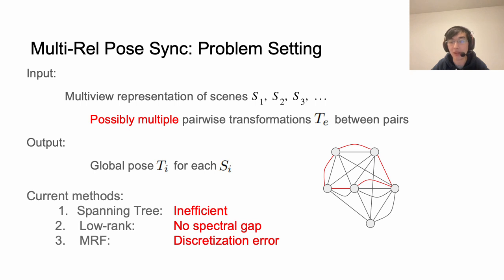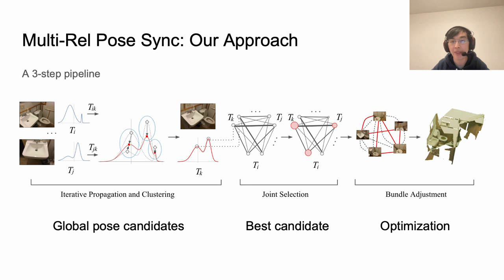Previous works for solving this problem can be classified into three categories. The first are spanning tree based methods which propagate global pose estimation along a spanning tree of the graph. The main drawback of such methods are the inefficiency due to the large number of paths and the choice of spanning trees. The second type formulates synchronization as a low rank recovery problem of a matrix encoding, which fails when there is no spectral gap due to the high noise for multiple estimations for each pair. The third category is Markov random field based methods which requires discretization of SE3 space for the belief propagation, and this leads to discretization error.